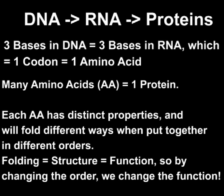The protein folds in a way that is determined by its structure, and that determines its function. So: DNA goes to RNA, which goes to amino acids, which form proteins. The DNA encodes which amino acids are made, those amino acids have certain physical properties that dictate how the protein folds, and that folding determines the protein's function. There's intentional redundancy here because it's a complicated concept, and it's very important to understand.